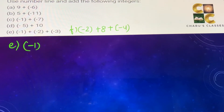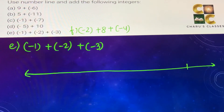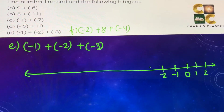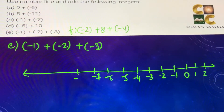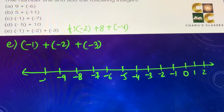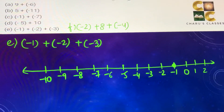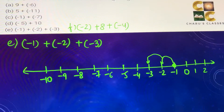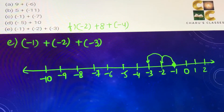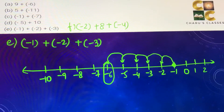Part (e): minus 1 plus minus 2 plus minus 3. We draw the number line. We begin at minus 1. Adding minus 2 means we move left 2: one, two. Then adding minus 3, we again move left 3: one, two, three. This gives the answer minus 6.